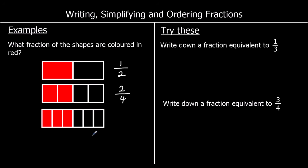And we've got another equivalent fraction here. This time there are six pieces, and three of them are in red. So three out of six or three sixths. That is also equivalent to one half. If you've got three out of six coloured in, that means that half are coloured in. Three out of six is the same as one half.